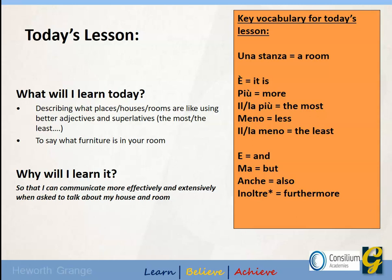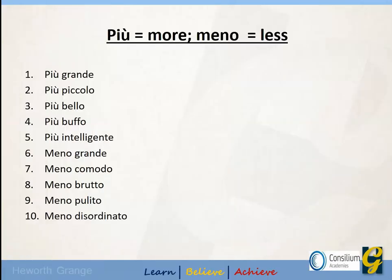And then some connectives which would be useful: e, ma, anche, in altre. Va bene? Allora, cominciamo — let's make a start. First of all, I want you to have a little think about the phrases that you're about to see. You're going to have to decide what you think they translate as. They're all using the words più o meno, and there's an adjective afterwards that you should have seen before. Allora, fa una pausa — take a pause. When you unpause, you will see all the answers.